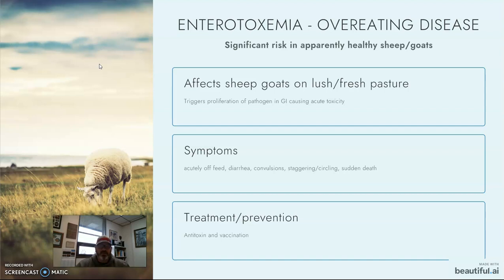The symptoms of enterotoxemia: animals will almost immediately go off their feet, have profuse diarrhea, go into convulsions, and show staggering or circling gait, then sudden death. You may not even see any of that — you might just walk out into the pasture and find one dead. Antitoxin vaccination can help with enterotoxemia or overeating disease.